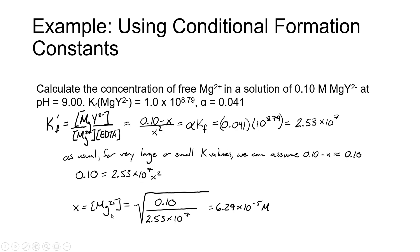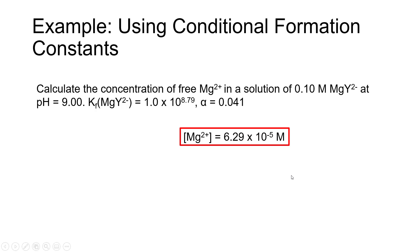X then is equal to the free magnesium concentration in solution, which is equal to the square root of 0.10 divided by 2.53 times 10 to the 7th. Square root of the whole thing is 6.29 times 10 to the negative 5th molar, which is our free magnesium concentration in this solution.